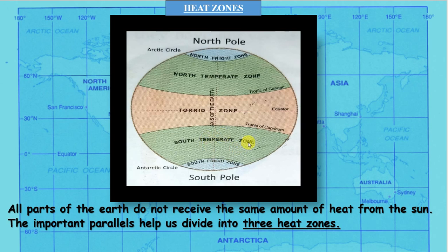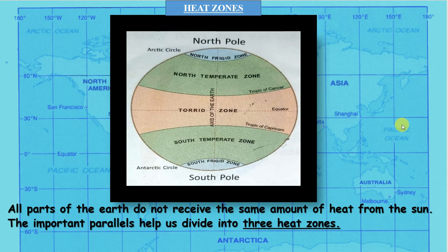To revise the temperate zone: the zone between the tropic of cancer and the arctic circle is the north temperate zone, and the zone between the tropic of capricorn and the antarctic circle is the south temperate zone. The sun rays in both these zones are never directly overhead — the angle decreases as we go towards the poles — so these zones are neither very hot nor very cold; they have a moderate temperature.